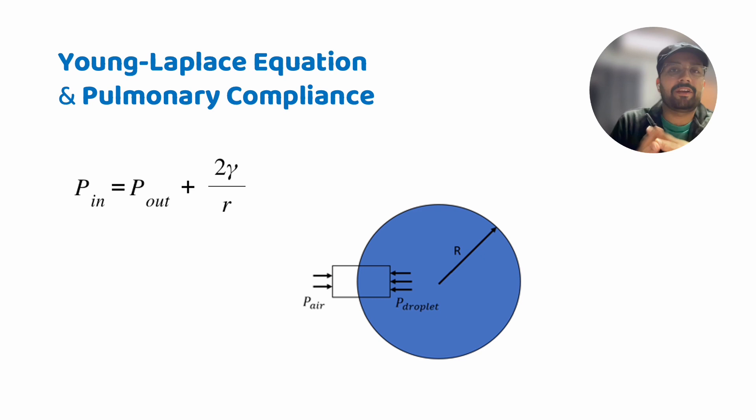This pulmonary surfactant which includes amphipathic phospholipids and certain amphipathic proteins, their goal is to reduce the surface tension or in other words the gamma parameter. So if the gamma parameter is less then we obviously need less air pressure. The air pressure after expiration will be good enough to maintain the alveoli in the open state and thereby preventing atelectasis.